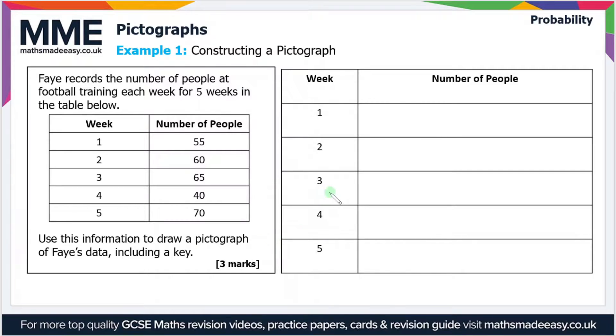I'm going to use one football as my symbol, so let's write the key up here. I'll just draw a circle for a football. So: one football equals 10 people.